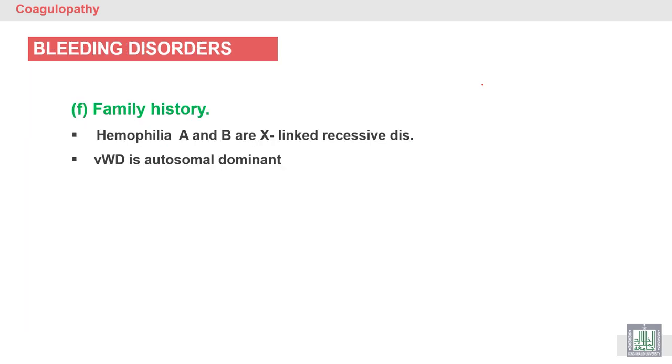Family history - diseases that are present in families, like hemophilia. Hemophilia A, factor 8, hemophilia B, factor 9. They are sex-linked. The genes of this disease are present on the X chromosome, so it's called sex-linked recessive disease.